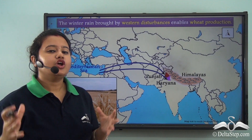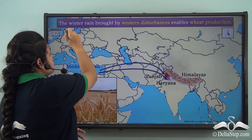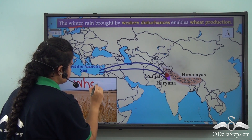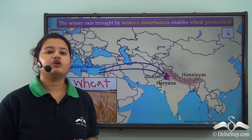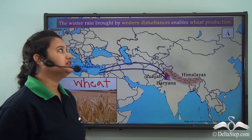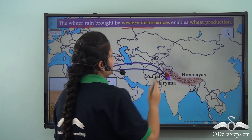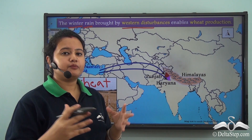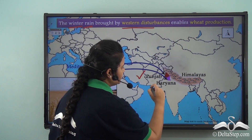The rainfall brought by western disturbances during winter enables the production of wheat crop. Wheat is a Rabi, or winter crop, and its production gets boosted by the rain brought by western disturbances. This wheat cultivation during winter is very prominent in the northwestern states of India like Punjab and Haryana.